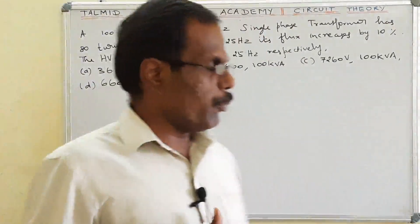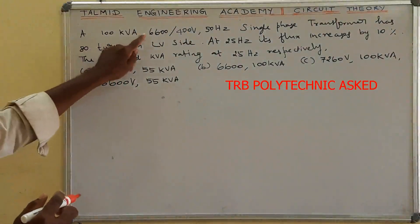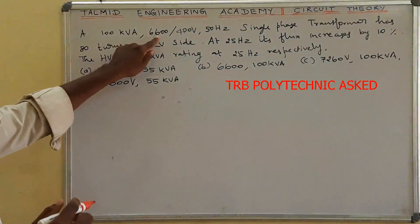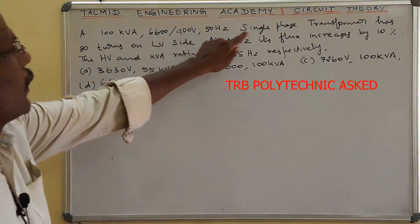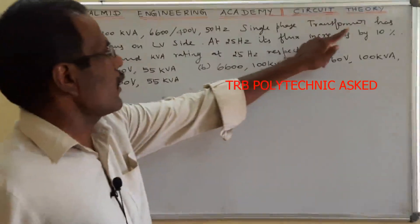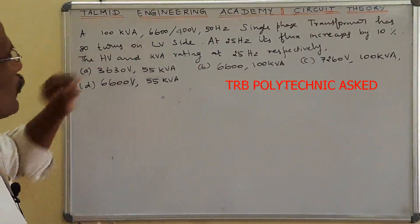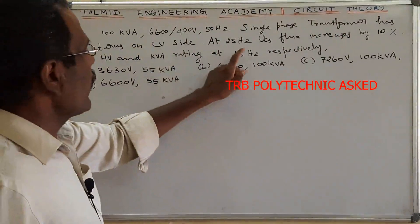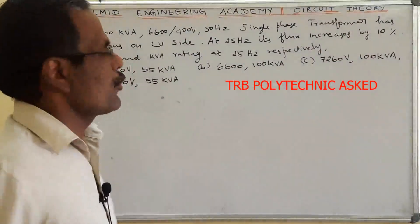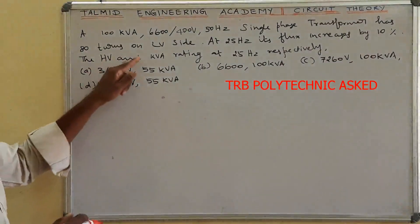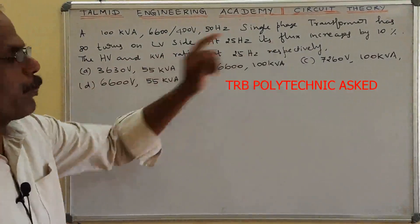Okay students, now my next work problem. A 100 kVA, 6600 by 400 volt, 50 Hz, single phase transformer has 80 turns on the LV side. At 25 Hz, its flux increases by 10 percent. Find the HV and kVA rating at 25 Hz.